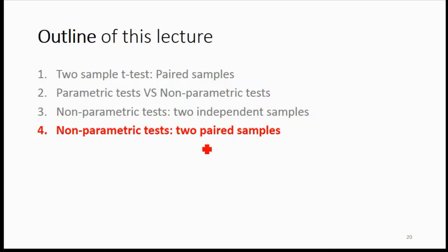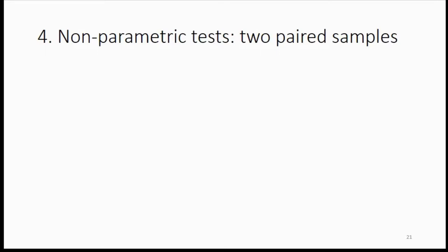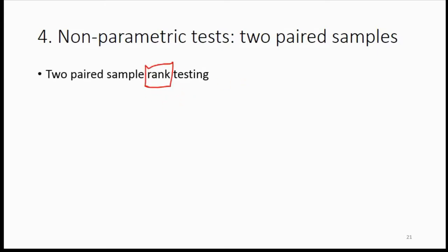Now we're going to move to a still two-sample test, but this time we're going to deal with the paired sample. Similarly, we're going to use the non-parametric test. The non-parametric test we use for the paired sample is different from the independent sample — the test you're going to use is the two paired sample rank test.